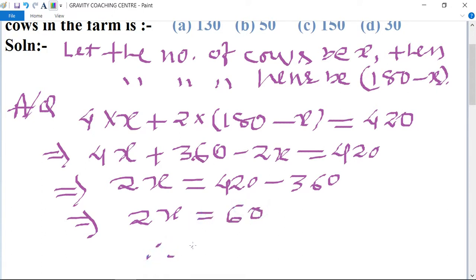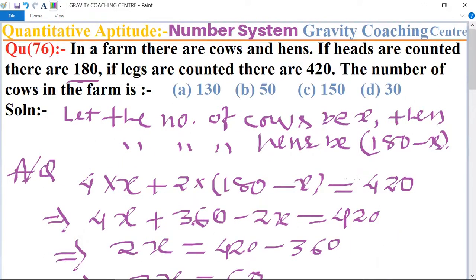Therefore X equals 60 upon 2, so cancel by 30, which is the required number of cows. So option D is the correct answer.